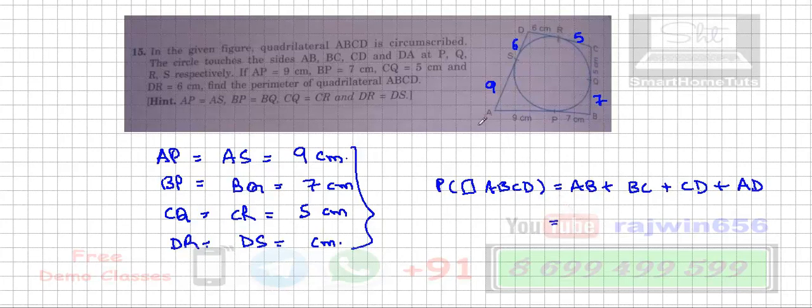So AB is 9 plus 7, that is 16. BC is 7 plus 5, that is 12. CD is 5 plus 6, that is 11. And finally AD is 9 plus 6, that is 15.